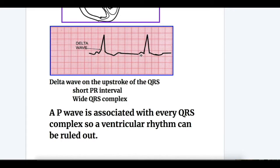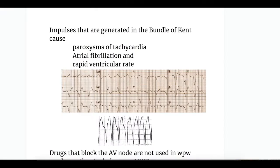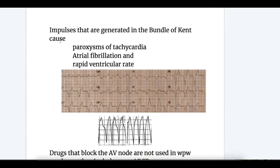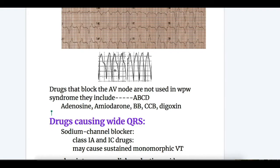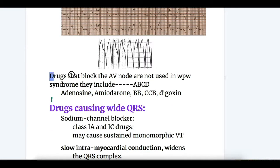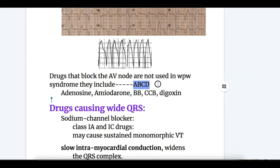Impulses generated in the bundle of Kent cause paroxysms of tachycardia, atrial fibrillation, and rapid ventricular rate, becoming irregular. Drugs that block the AV node are not used in WPW syndrome. The mnemonic is ABCD: Adenosine, Amiodarone, Beta-blockers, Calcium channel blockers, and Digoxin — all contraindicated.